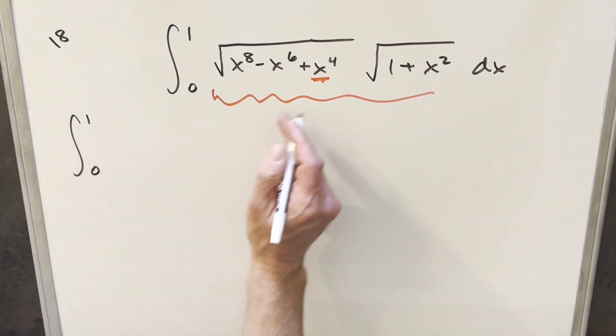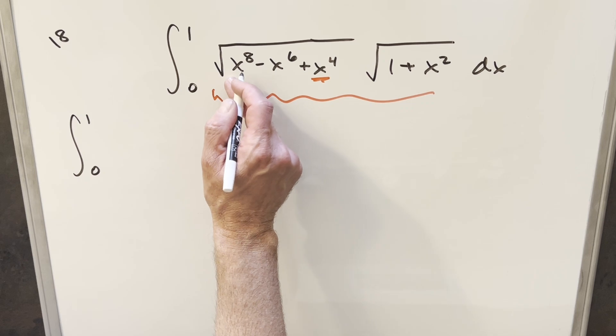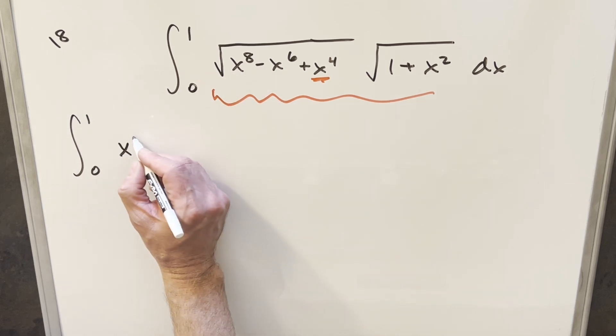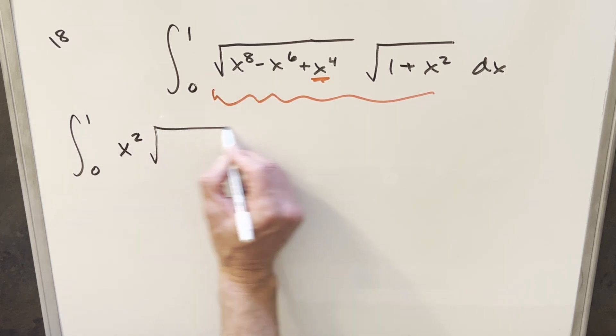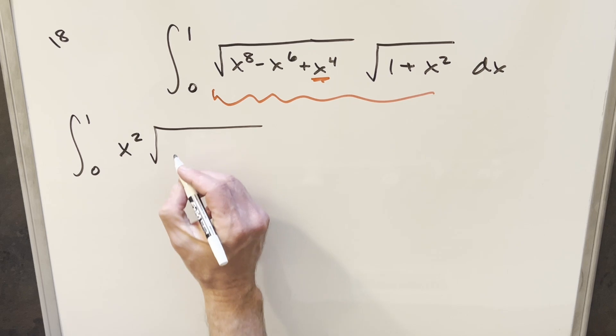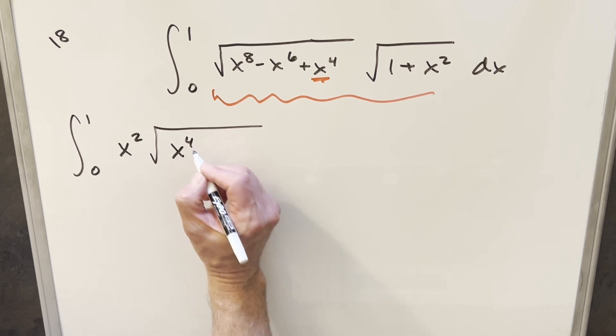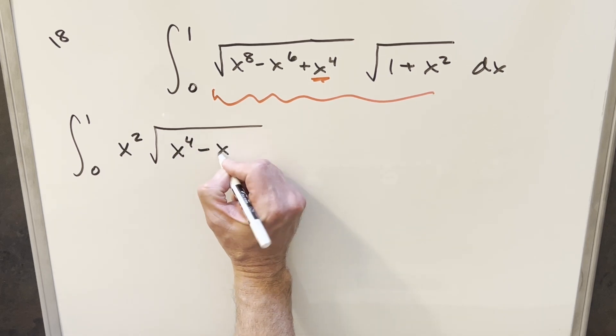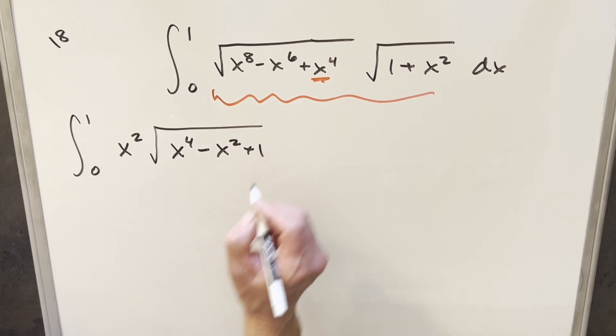So when we rewrite this, if we factor out x to the 4th and x to the 4th is inside the radical, then we're going to have an x squared in front. And then kind of just dividing by x to the 4th on each term, this is going to become x to the 4th, this one's going to be minus x squared, and the last one's just going to be plus 1.